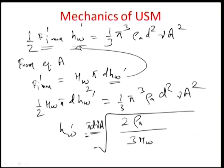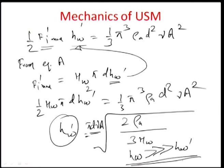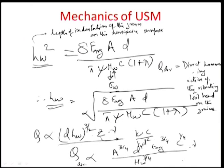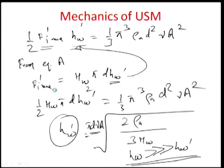Comparing h_w_dash for free-flying grains with the earlier h_w for directly hammered grains, we find h_w is very high compared to h_w_dash. The h_w from direct hammering included many terms: 8 F_average times A times d, divided by pi times psi times sigma_w times c times (1 + lambda). Magnitude-wise, h_w from direct hammering is always much higher than h_w_dash from free-flowing action.